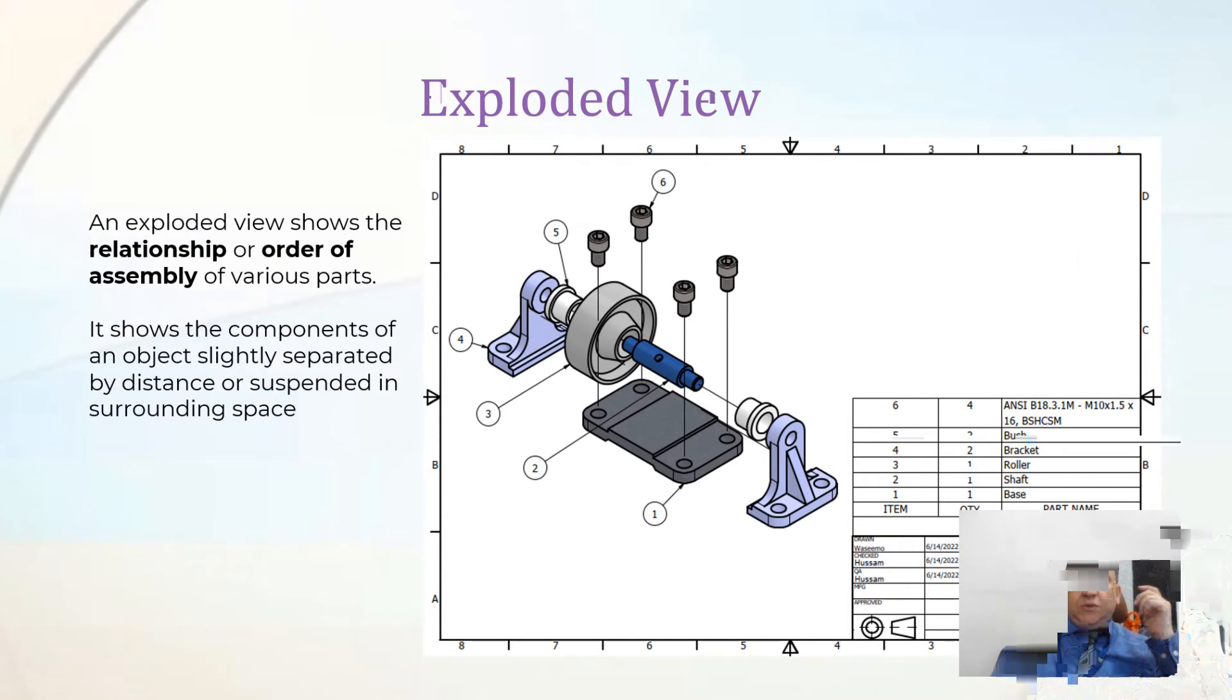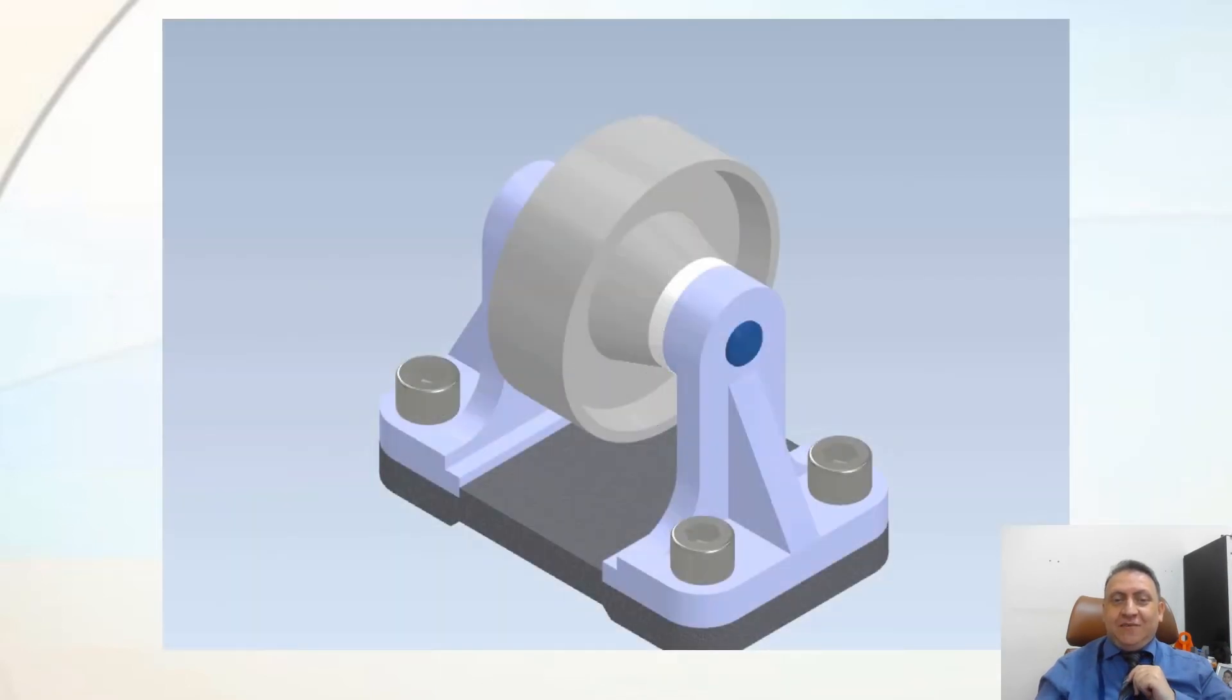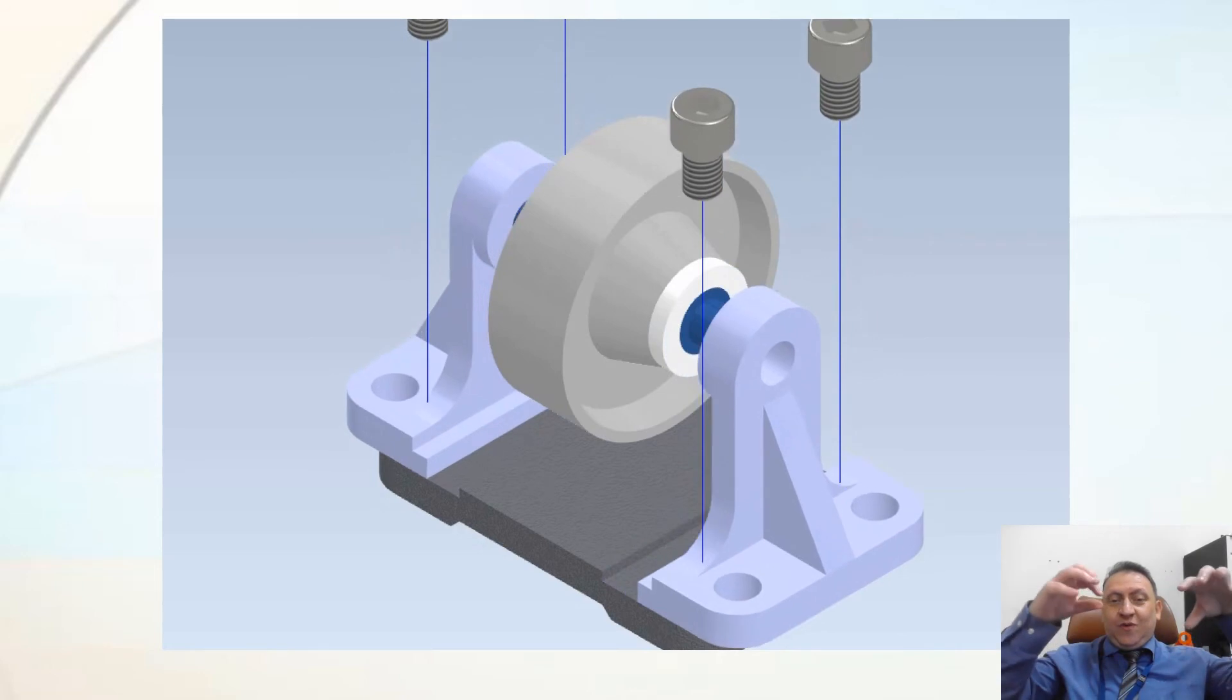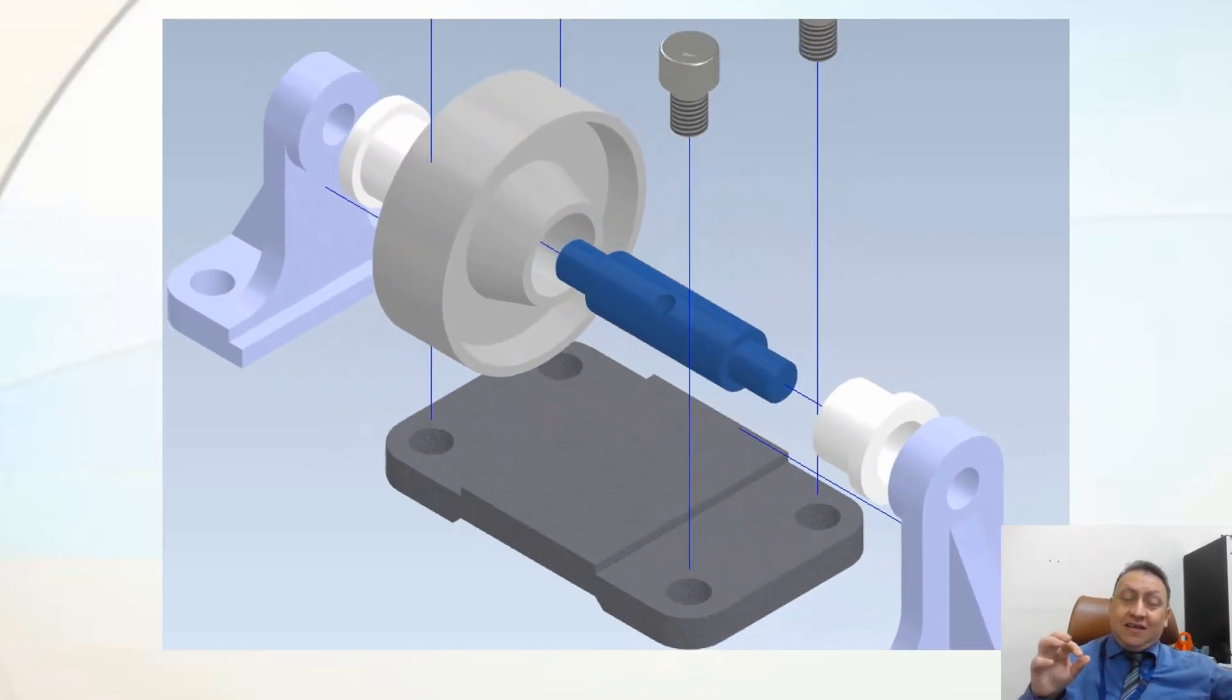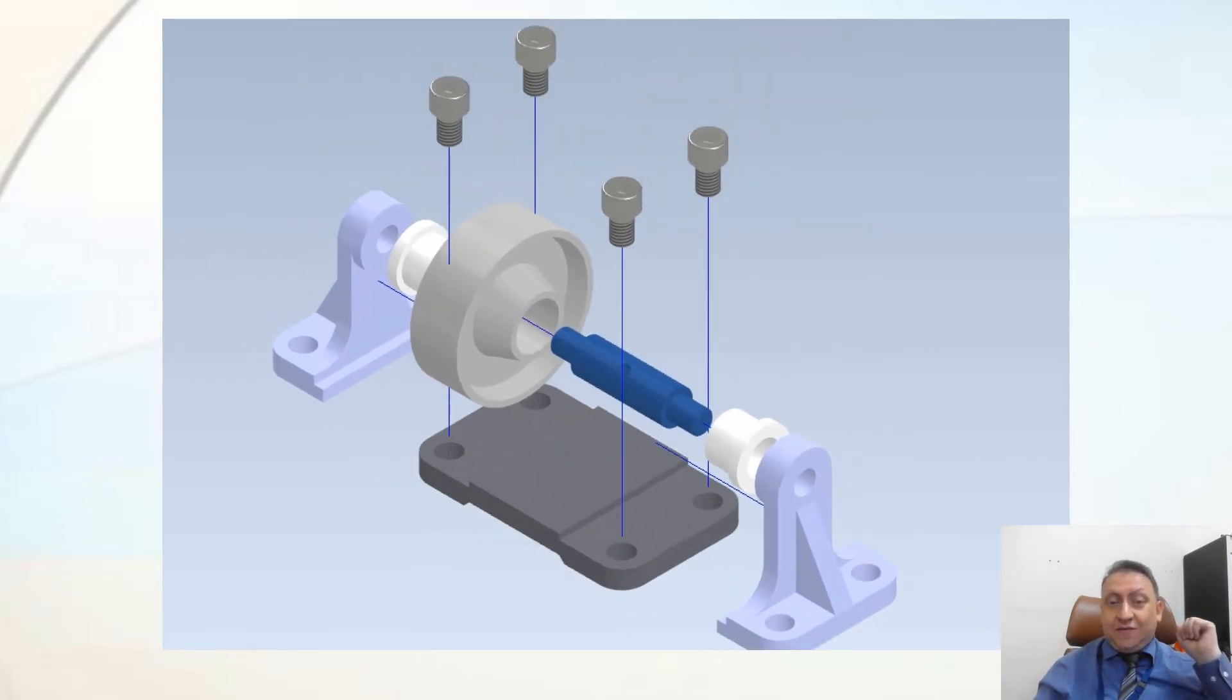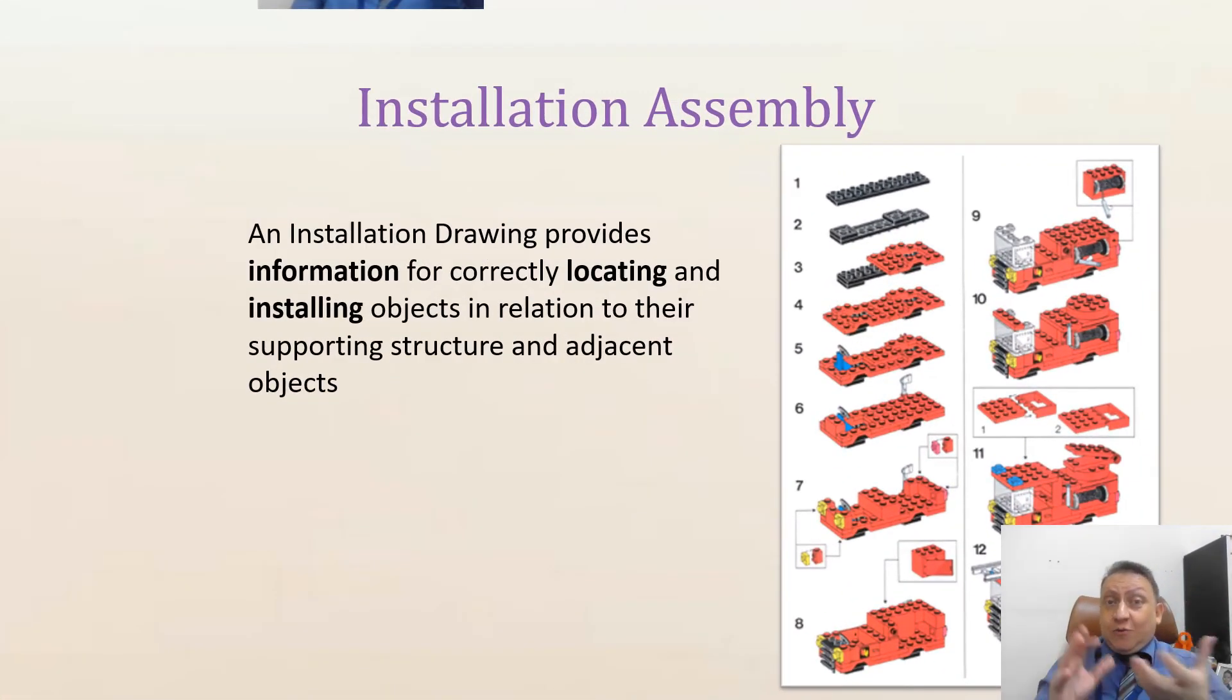Assembly drawing may include exploded view. Exploded view, the best thing about exploded view, it show you not only the relationship between the parts, but it show you how the parts, the order of the assembly. I will give you a clear example. See here, you can see first remove the bolt, remove the bracket, remove the bushes, then the roller and the shaft. So now you can understand how they are assembled together.